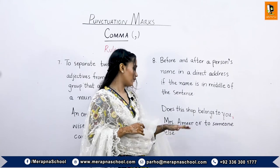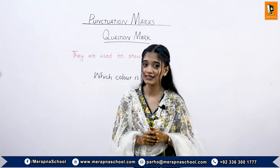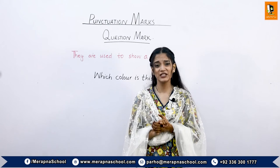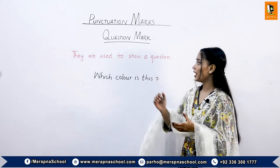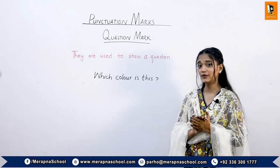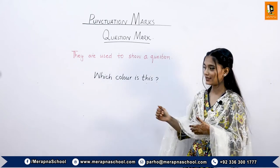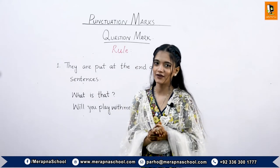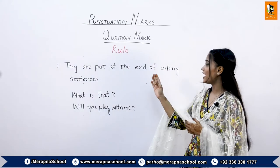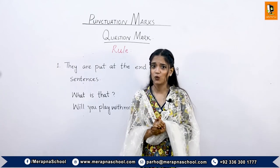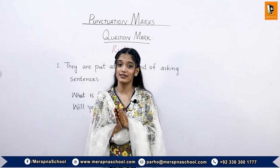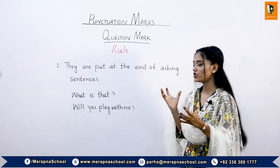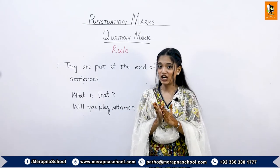Now we will start a new punctuation mark, which is the question mark. We use the question mark to show a question. For example, in the sentence 'Which color is this?' there is a question mark. There is only a single rule to use a question mark: it is placed at the end of asking sentences. Asking sentences are sentences which ask a question; they are also called question sentences.